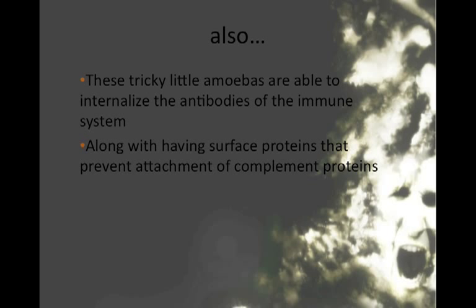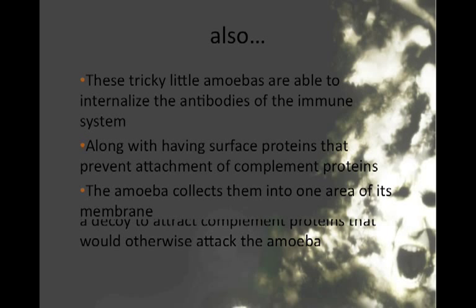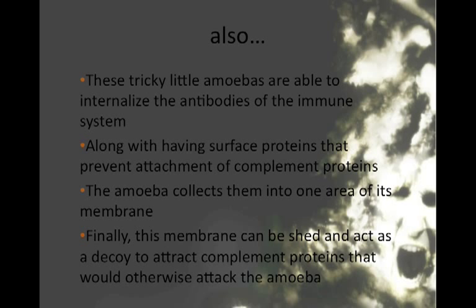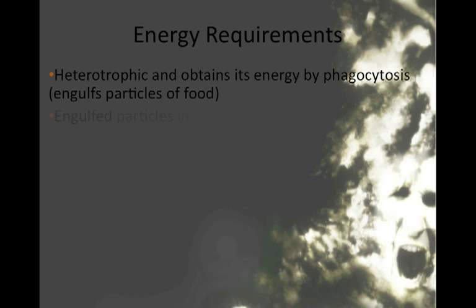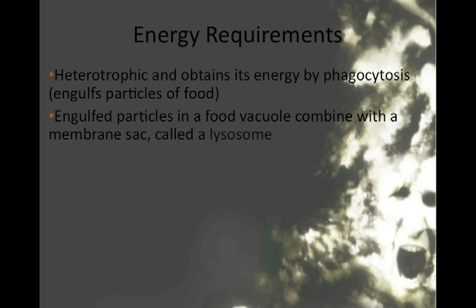Along with having surface proteins that prevent attachment of complement proteins, the amoeba collects the proteins into one area of its membrane. Finally, this membrane can be shed and act as a decoy to attract other complement proteins that would otherwise attack the amoeba. The principles are similar with this amoeba as with other amoebic life. It is heterotrophic and obtains its energy by phagocytosis, engulfing particles of food. The engulfed particles are encased in a food vacuole that combines with a membrane sac called a lysosome.